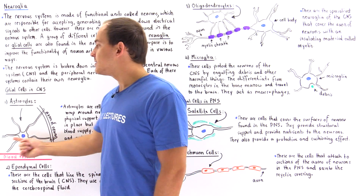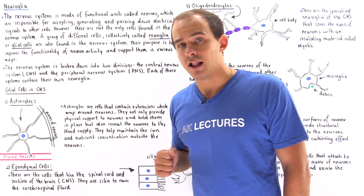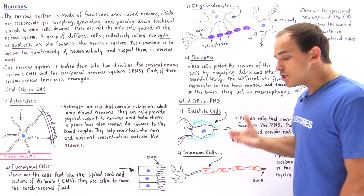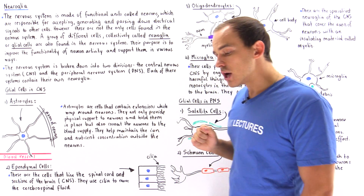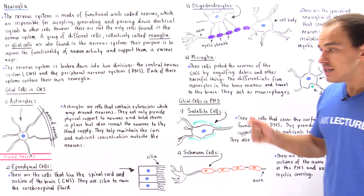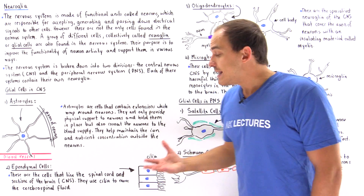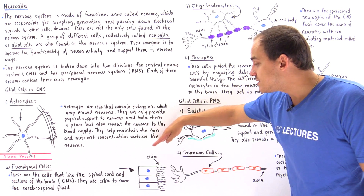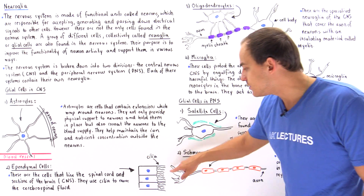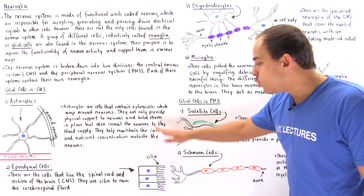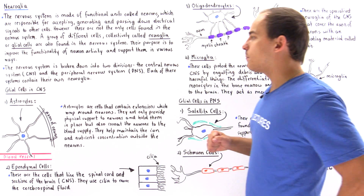The second type of glial cell in the central nervous system is the ependymal cell. Ependymal cells are those cells that line the spinal cord as well as certain sections of the brain. The entire purpose of these ependymal cells is to help generate the cerebrospinal fluid. They use cilia that move in a wave-like fashion, as shown in the diagram, to help move our cerebrospinal fluid around our body.